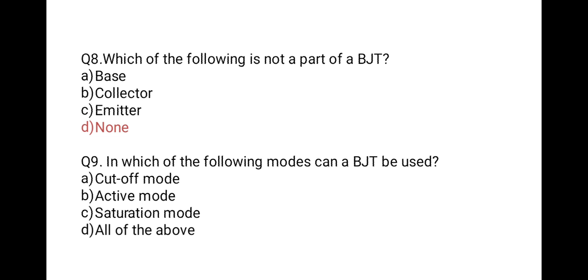The next question is: in which of the following modes can a BJT be used? First: cutoff mode; second: active mode; third: saturation mode; last: all of the above. When BJT works in cutoff mode it acts like an open switch; in saturation mode it acts as an on-switch; and in active mode it acts as an amplifier. So all three are correct modes and the answer is D, all of the above.